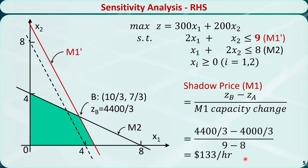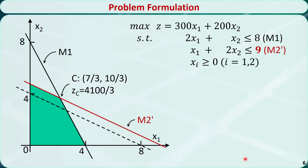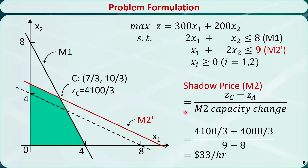This means each hour increase on machine 1 will bring in $133 more profit. For machine 2, we do the same analysis. If we increase the available time by 1 hour, from 8 to 9, the constraint changes to M2', and the optimal solution moves to point C. The objective function value at point C is 4100/3. The shadow price of machine 2 is the new z value minus the old z value divided by machine 2's capacity change, which equals $33 per hour — meaning each hour increase on machine 2 brings in $33 more profit.